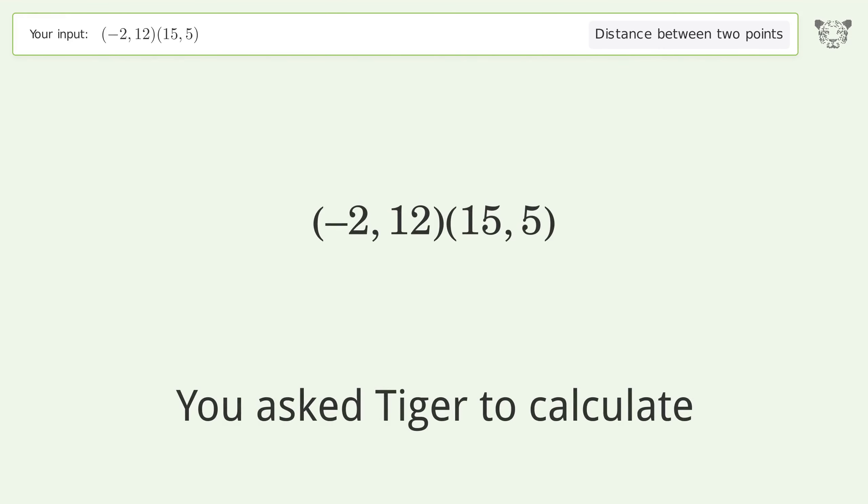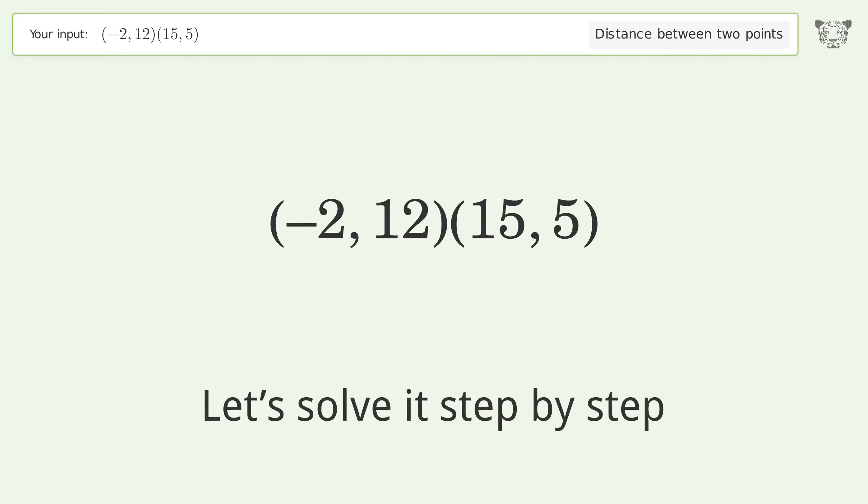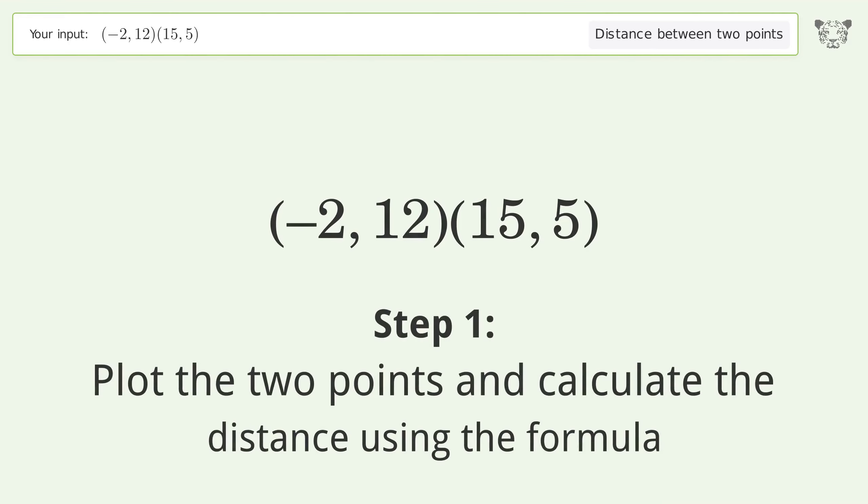You asked Tiger to calculate the distance between two points. The distance between the two points is the square root of 338 or 18.385. Let's solve it step by step. Plot the two points and calculate the distance using the formula.